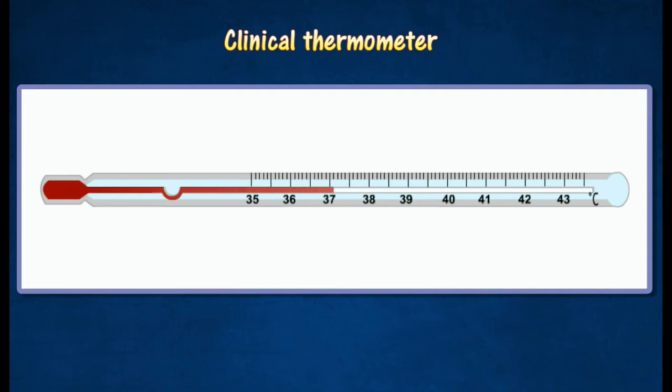When the thermometer is removed from the mouth, the mercury in the bulb cools and contracts, breaking the mercury thread at the constriction. The mercury beyond the constriction stays in the tube and shows the body temperature.